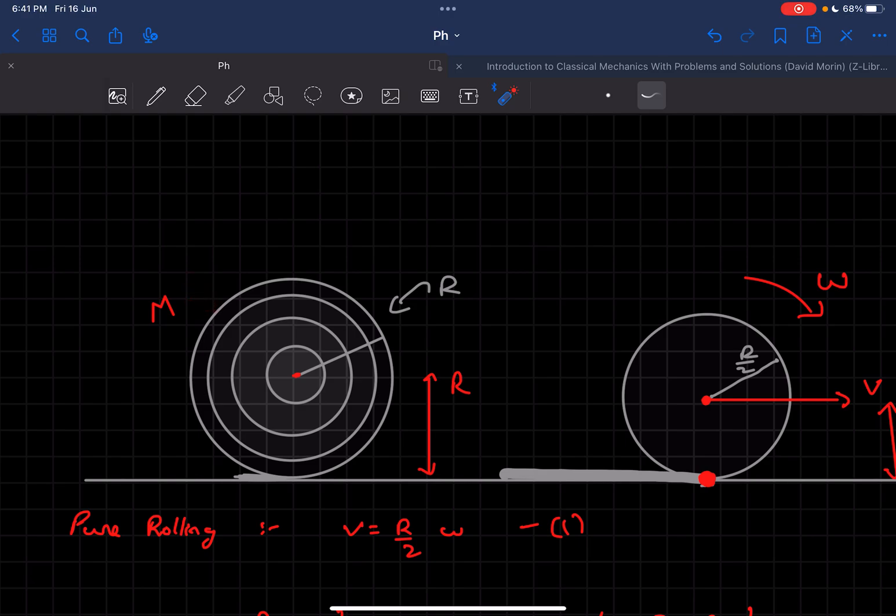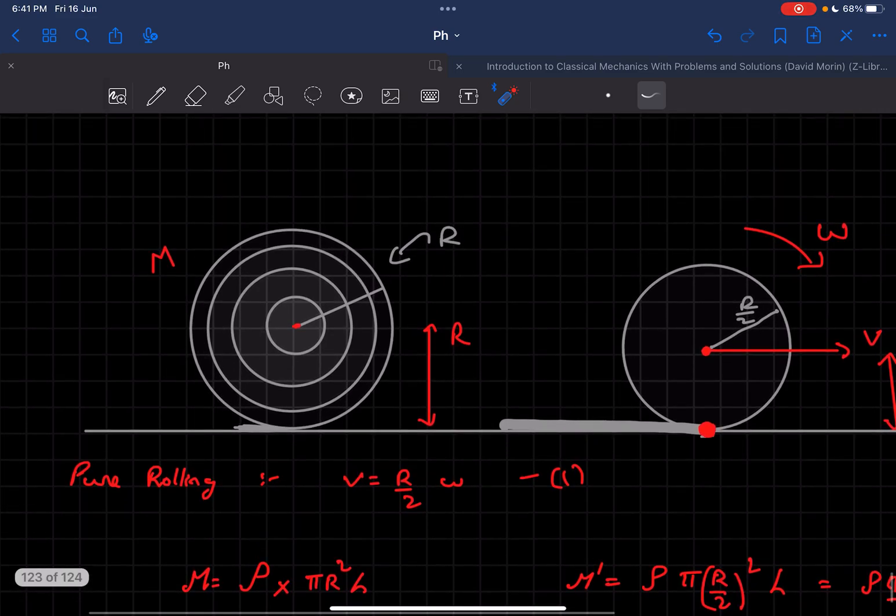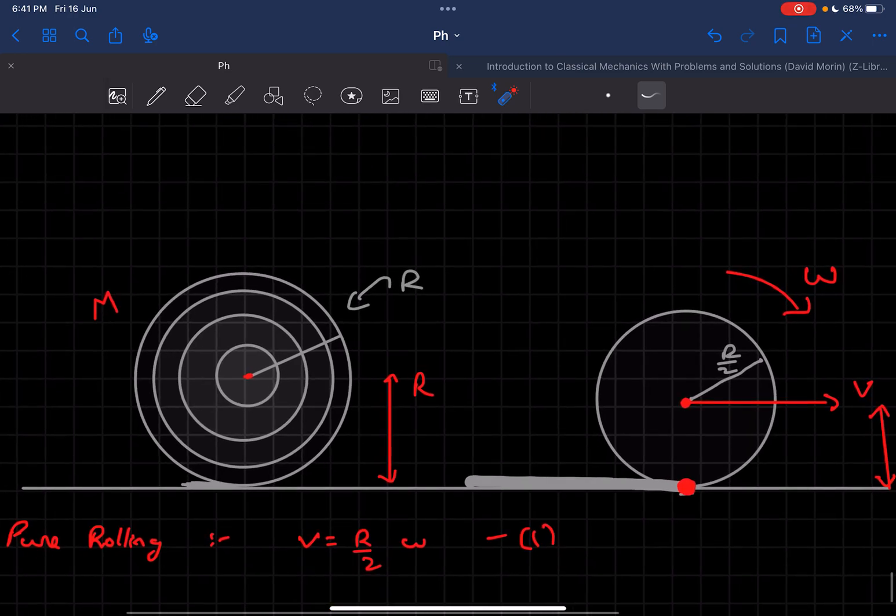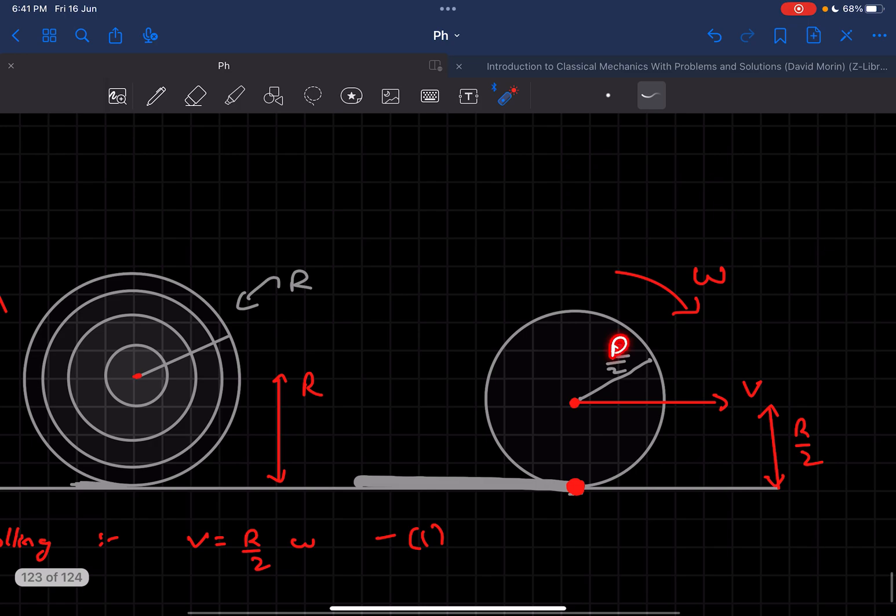It starts unrolling, and after a while, initially its radius was given to be R. After a while its radius becomes halved.